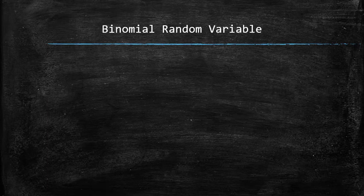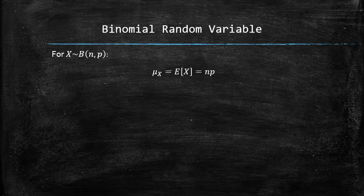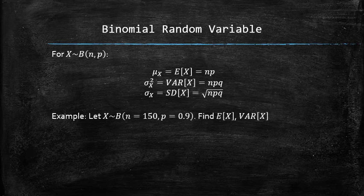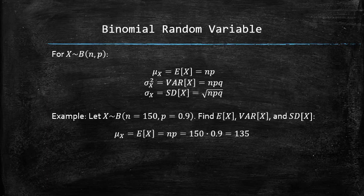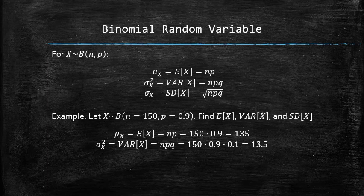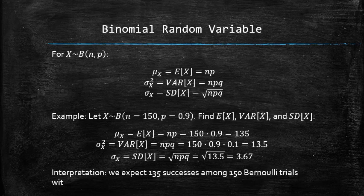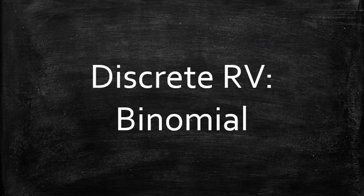In summary, for any binomial random variable with parameters N and P, the mean, variance, and standard deviation can be computed using the formulas. For example, for a binomial random variable with N equals 150 and P equals 0.9, the mean is 150 times 0.9 equals 135, the variance is 150 times 0.9 times 0.1 equals 13.5, and the standard deviation is the square root of 13.5, which is approximately 3.67. We would expect 135 successes among 150 Bernoulli trials with probability of success 0.9. We discussed binomial random variables and developed formulas for computing probabilities, mean, and standard deviation.